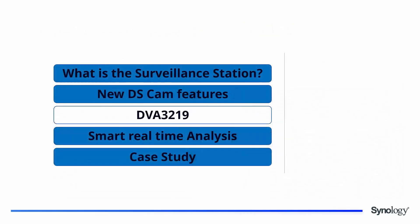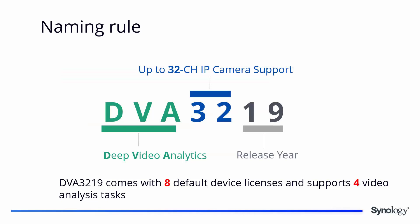We now introduce the new NAS dedicated for surveillance: the DVA3219. DVA stands for Deep Video Analytics, indicating what this device does. 32 shows the maximum number of IP cameras a single DVA3219 supports, and 19 is the release year. What makes the DVA distinctive from other NAS models is that it comes with eight default licenses and supports up to four video analytics tasks.